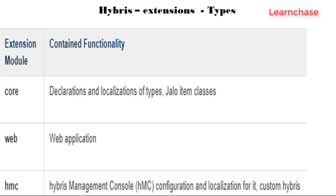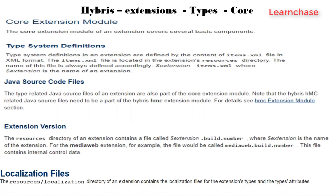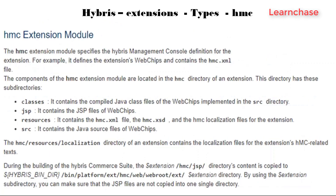There are three types of extensions. Core extensions handle declaration and localization of types, and Jalo item classes. Web application extensions are associated with one URL. HMC extensions are now called back office extensions. The core extension module has type system definitions, Java source code files, extension version, and localization files. We need to understand which files to edit and where to make modifications based on project requirements.